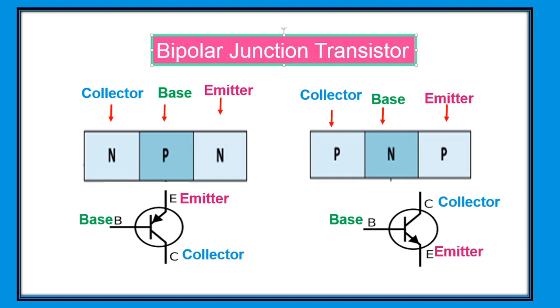There are two types of bipolar transistor: NPN and PNP, which describe P-type and N-type semiconductor. The three terminals are labeled emitter, base, and collector.